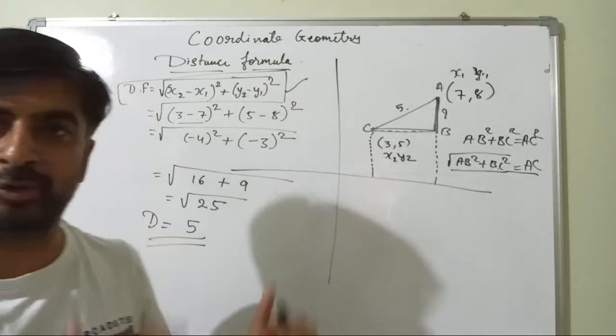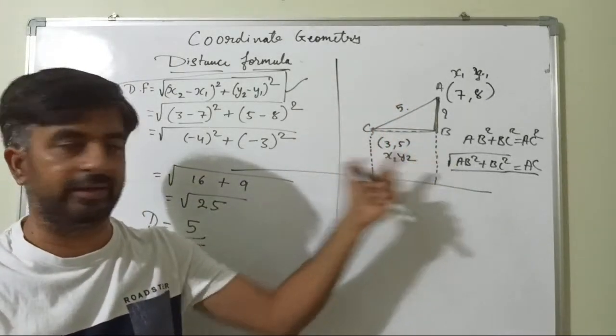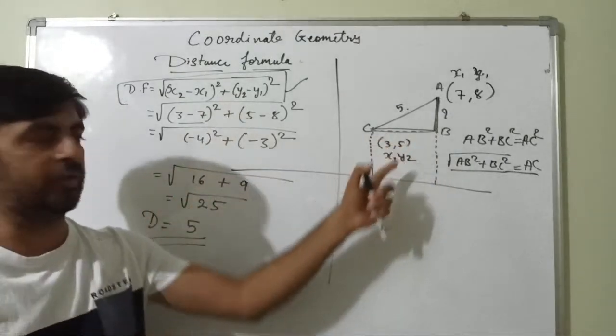So this way we can find out the distance between any two coordinates given on a Cartesian plane. And this is the derivation part also guys, how we had derived.